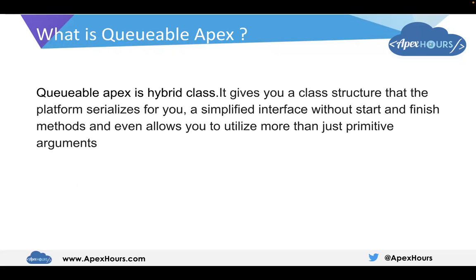First let's understand what is Queueable Apex. Queueable Apex is a hybrid class which gives you a class-like structure that the platform serializes for you — a simplified interface without start and finish methods, and even allows you to utilize more than just primitive arguments. Basically, Queueable Apex is a mixture of batch Apex and future Apex. As we know, batch Apex has three methods: start, finish, and execute.